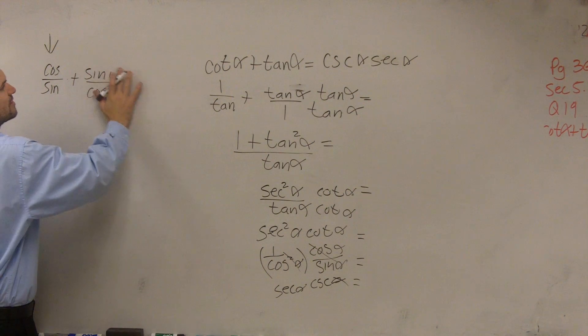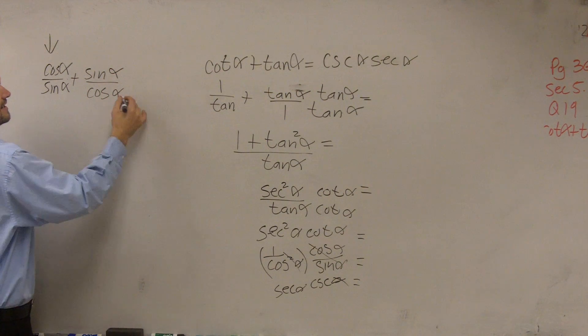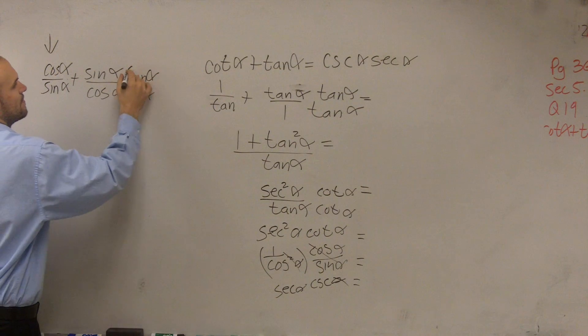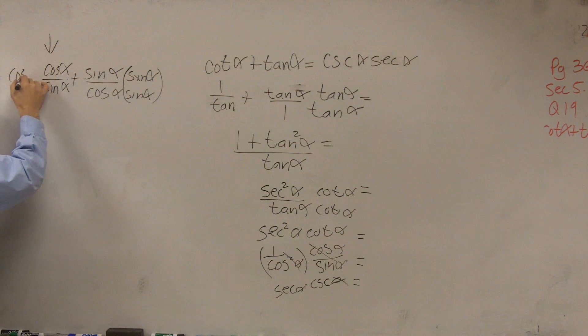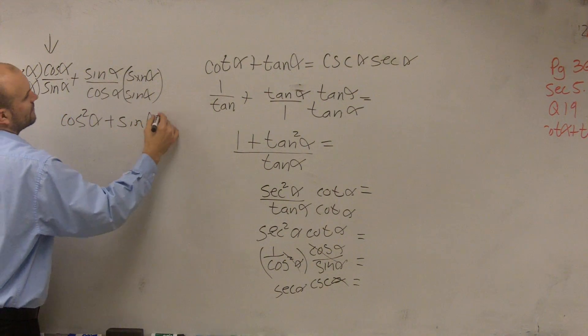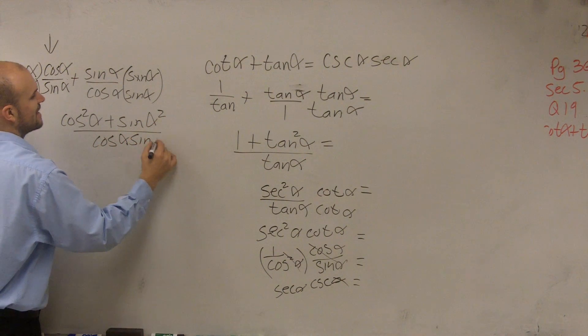So, to combine like terms, I need to multiply here by sine of alpha, sine of alpha, here by cosine of alpha over cosine of alpha. Leaving me with cosine of alpha squared plus sine of alpha squared all over cosine of alpha, sine of alpha.